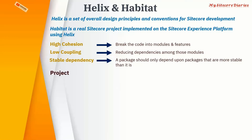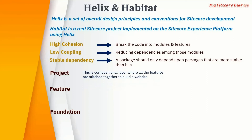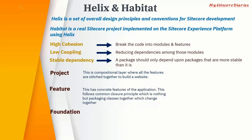Based on these principles, Helix divides your project into three folders: the Project folder, the Feature folder, and the Foundation folder. The Project layer is where you assemble your website — you stitch together all your features. The Feature layer contains concrete features like news, hero banners, and similar components.